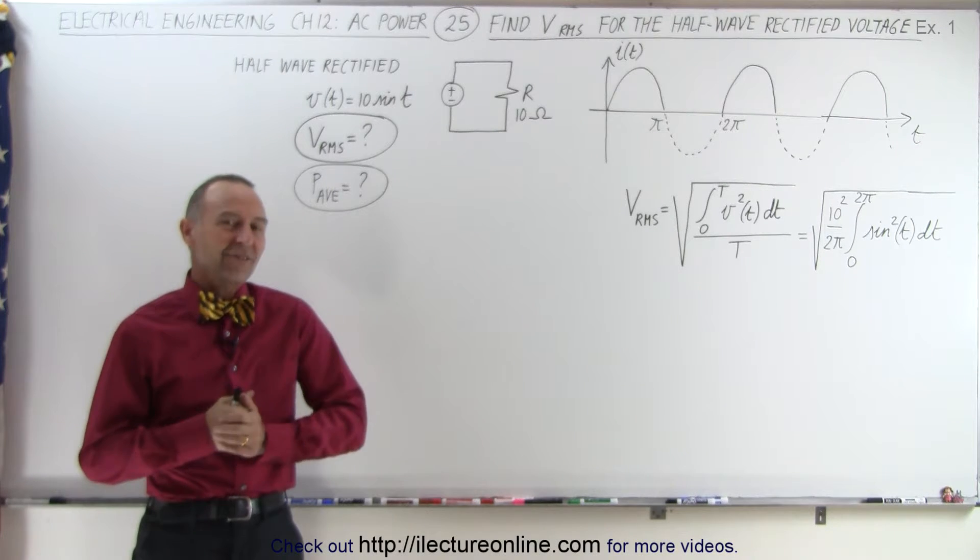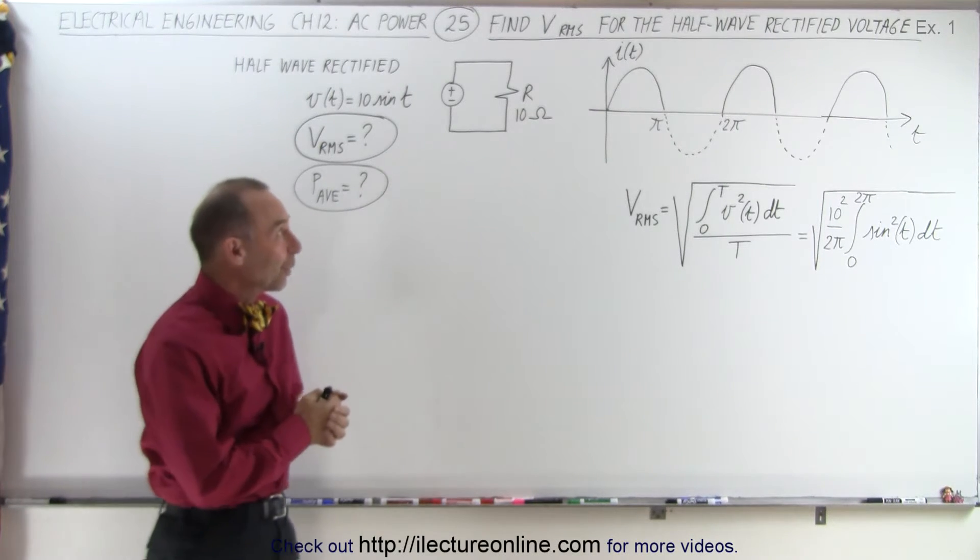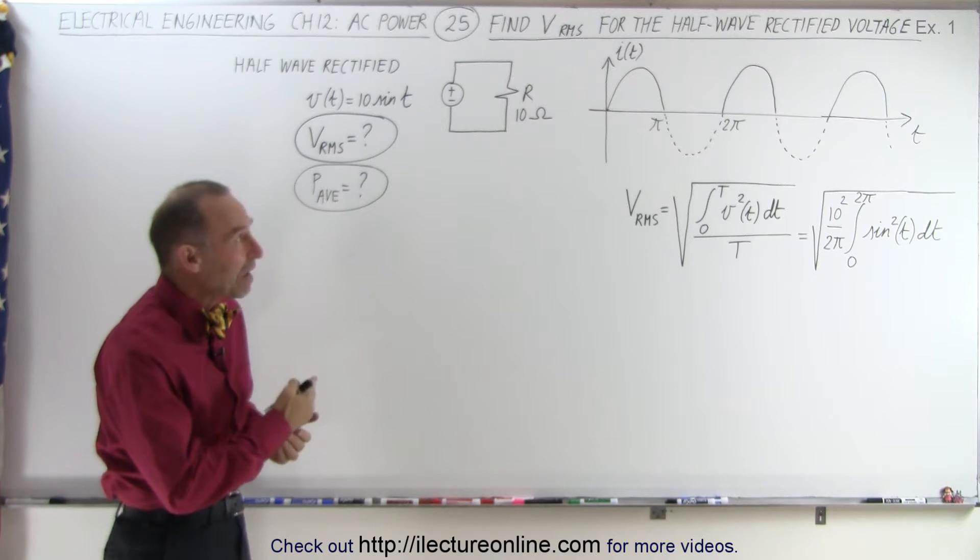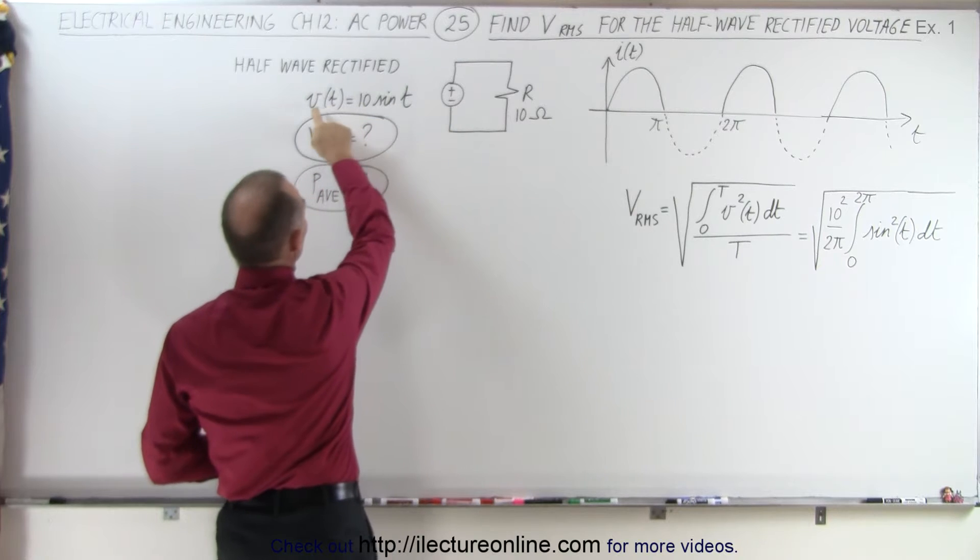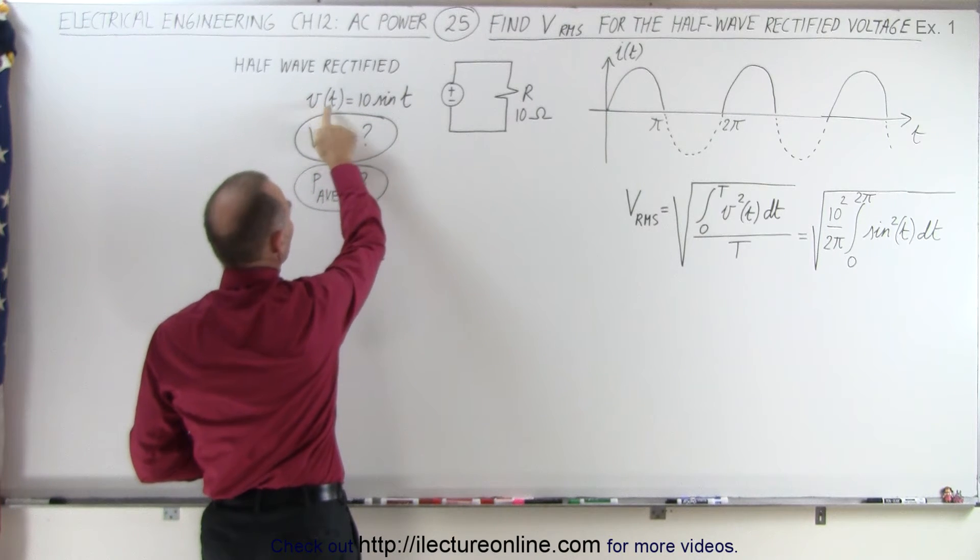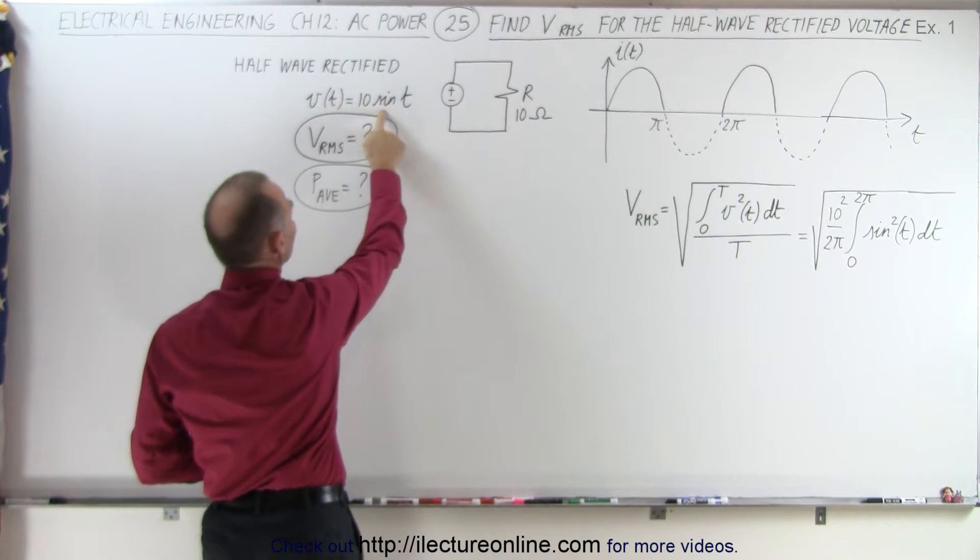Welcome to Electronline. Now let's try our first example here. We have what we call a half-wave rectified voltage. So we have a voltage source. Here's the equation defining the voltage as a function of time, 10 times the sine of T.